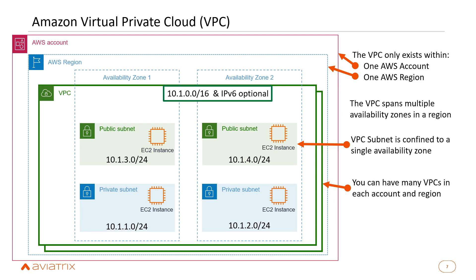You can have many VPCs in your account and in a region. The default limit is five VPCs per region, but that's a soft limit you can raise by asking AWS. You could have hundreds of VPCs within a region. There is also VPC flow logs, which keeps a record of all traffic going between EC2 instances or in and out of the VPC, so you can later analyze and visualize that data.